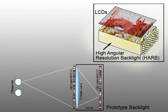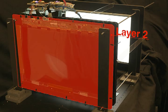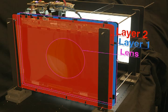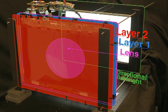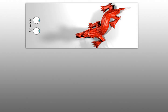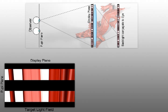We constructed a prototype display consisting of two modified LCD panels, a Fresnel lens, and an additional monitor. The rear monitor and lens emulate a thin HAR backlight in this prototype. For compressive image synthesis, we render a light field showing a 3D scene from multiple perspectives over the two pupils of a human observer. The prototype has an LCD in front of a lens with a backlight conjugate to the pupil plane of the observer.